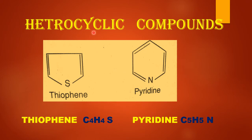Heterocyclic compounds are those compounds in which the cycle contains one or more atoms other than carbon. For example, in thiophene, one of the carbon atoms is replaced by sulfur, and in pyridine, one of the carbon atoms of the benzene ring is replaced by nitrogen.